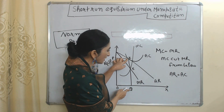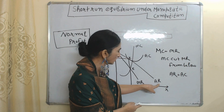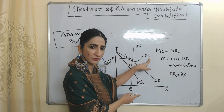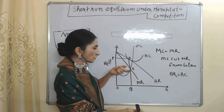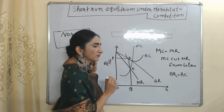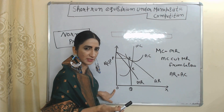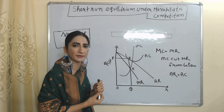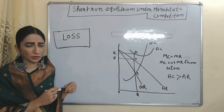KQ is our average revenue because point K touches the average revenue curve. This same point K also touches the average cost curve, so KQ is also our average cost. Therefore, at OQ amount of output, average revenue is equal to average cost, meaning OQ amount of output is giving us normal profit. All conditions of normal profit are satisfied at this amount of output.